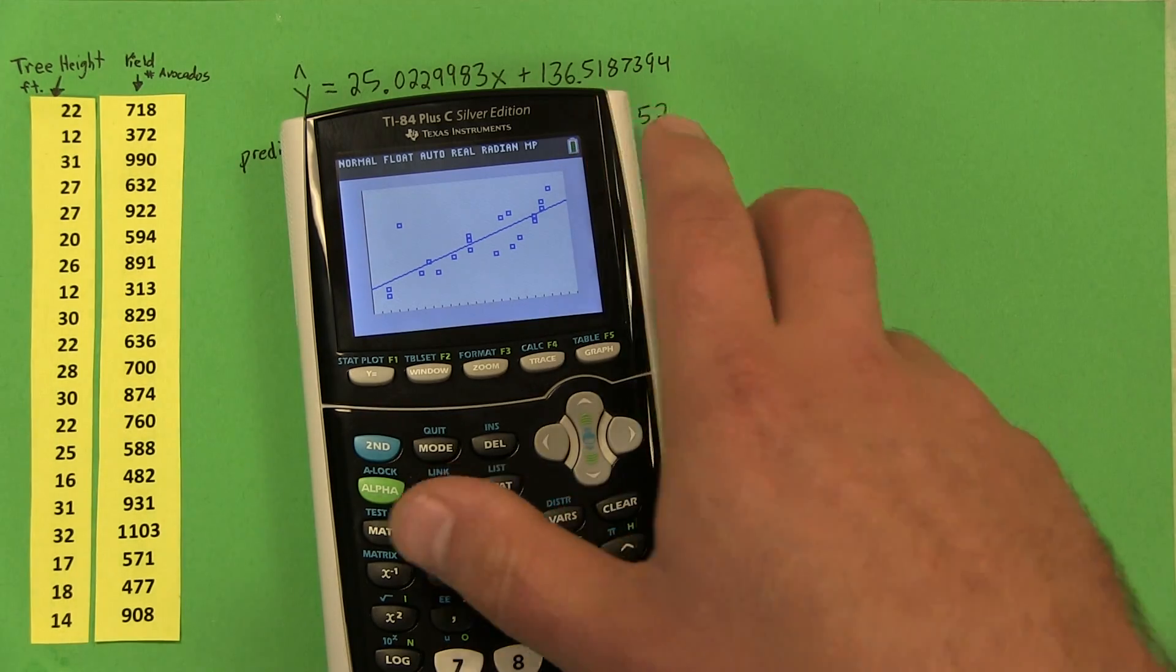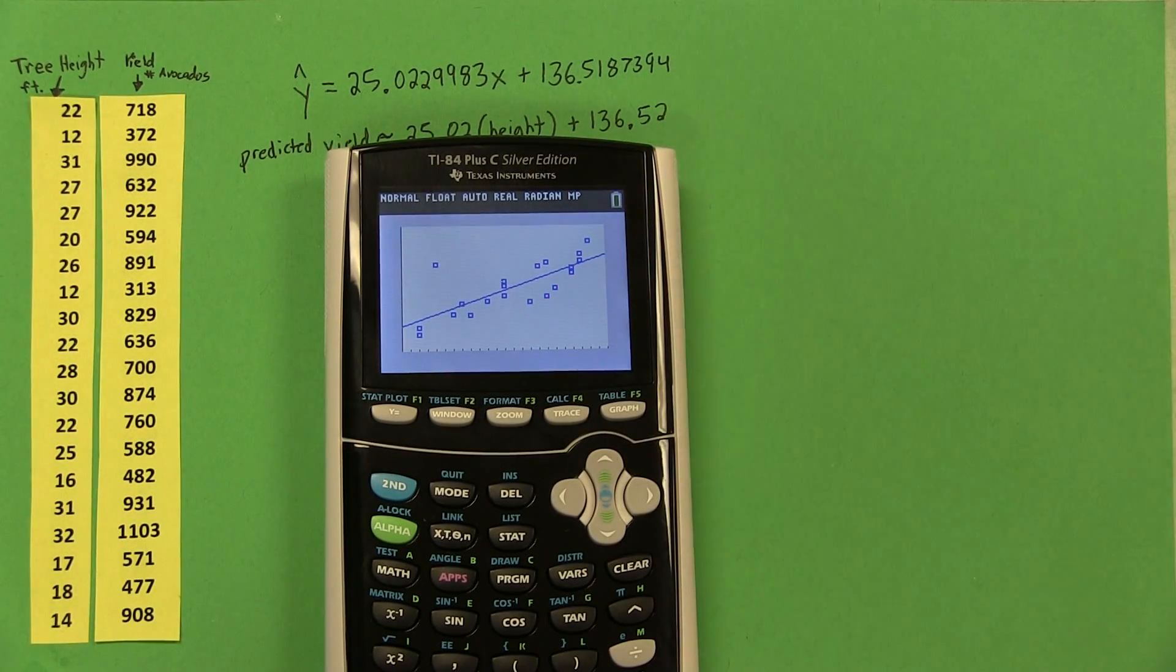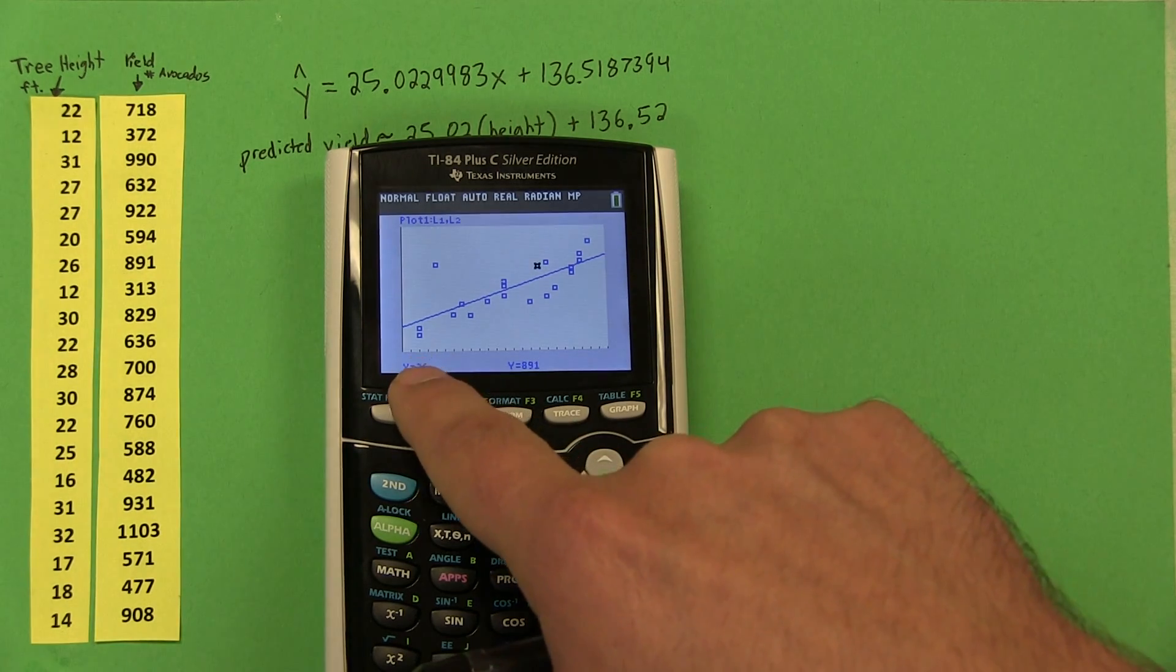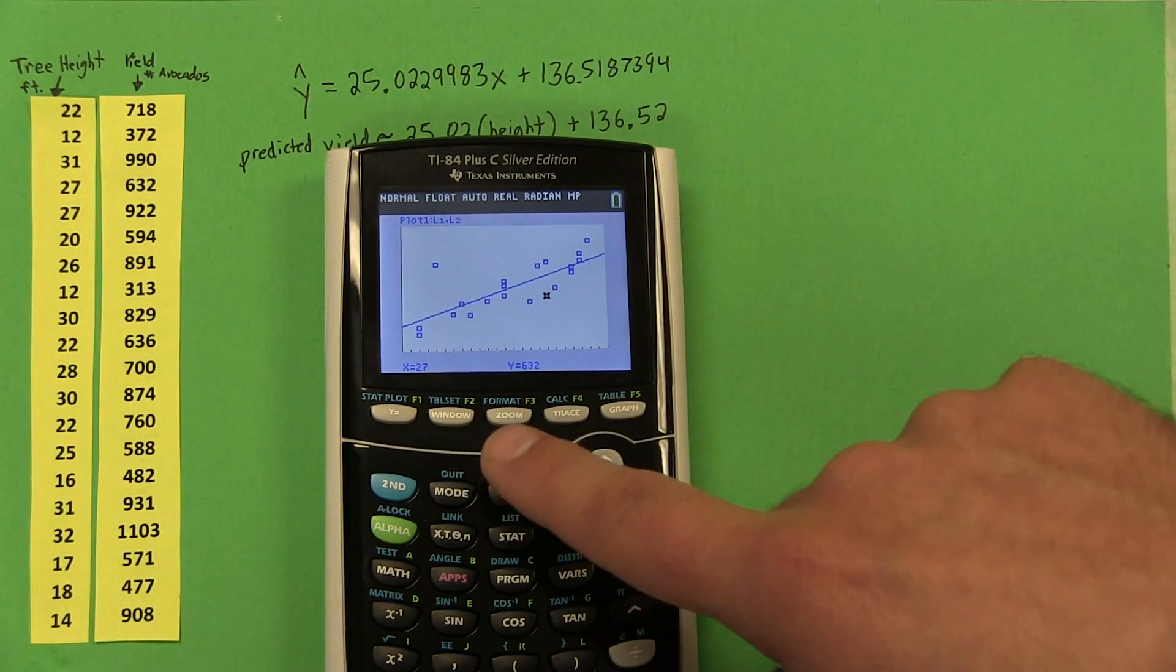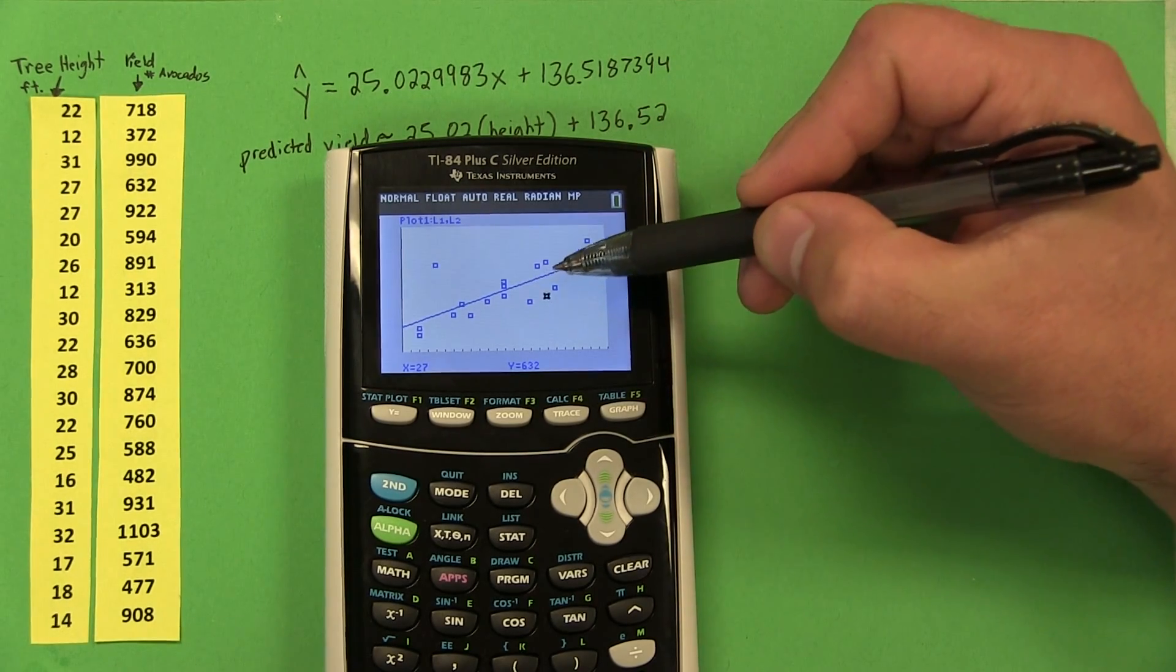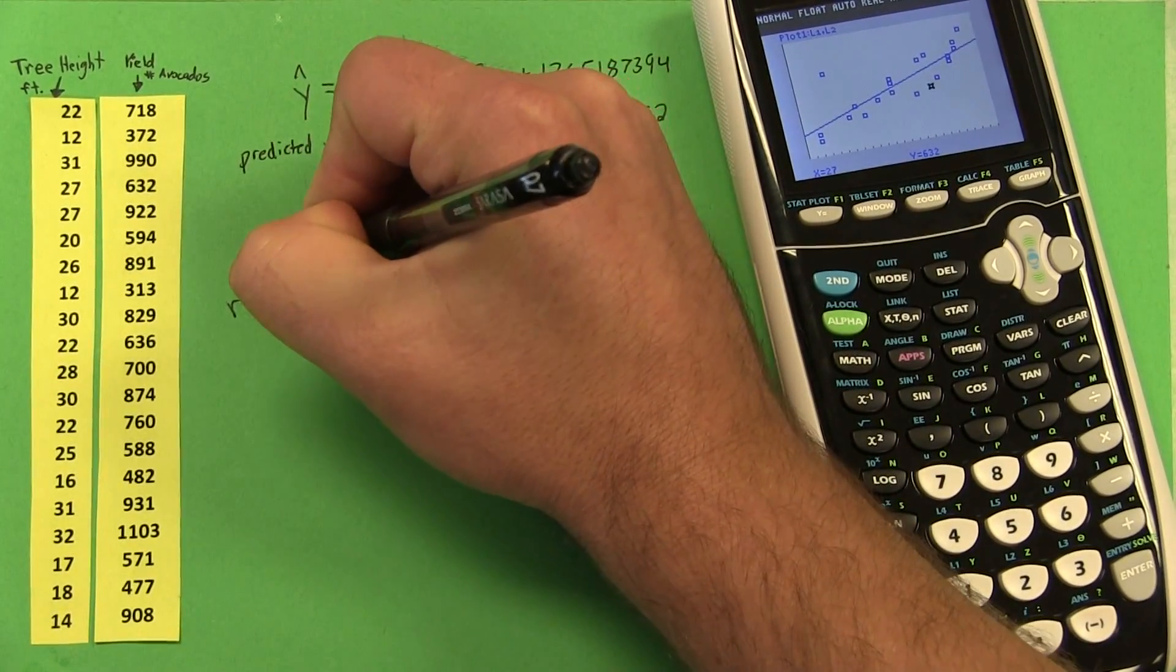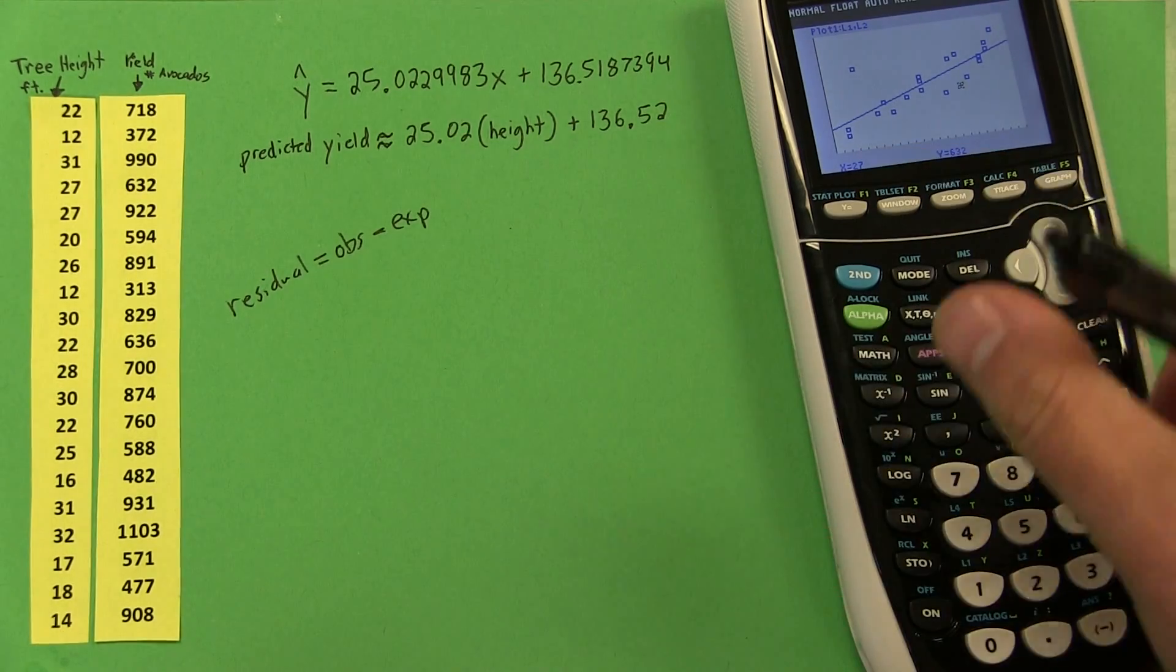The next thing I want to talk about is residuals. Now, some of these avocado yields are a little bit away from the model, which means that for that height, the model didn't predict the avocado yield perfectly. I mean like this one right here, it predicted quite well. And if you push the trace button here, you can actually jump from scatter plot point to point. And down here it tells you that that's the tree height and that's the avocado yield for that particular one. So for example, for this one right here, the tree height was 27 feet and that particular tree produced 632 avocados. However, our model, which is shown by the line on there, says we would predict there would be more avocados. What that means is we have a residual.